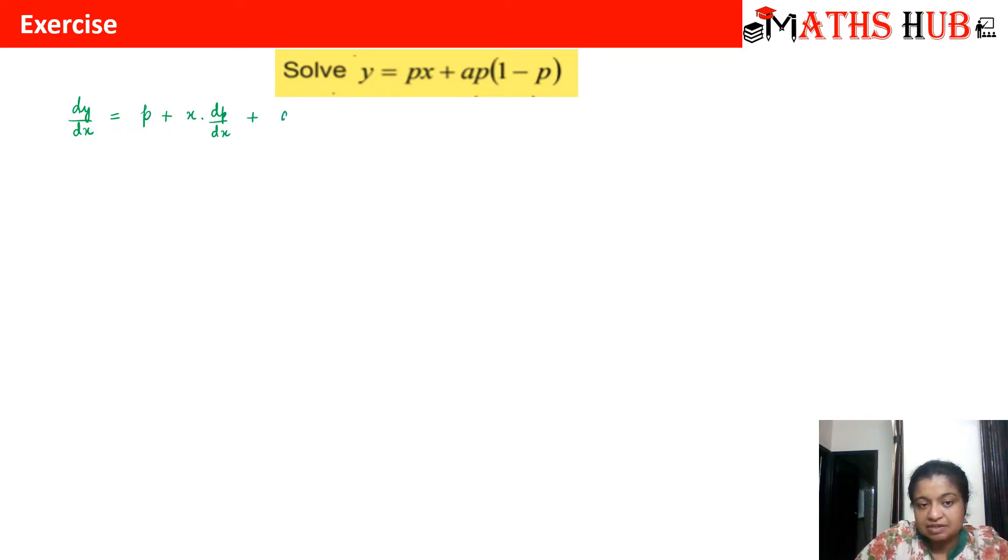Plus a is constant. Now we have p times 1 minus p. You can open it up. The first term will be p, so we will get derivative of p is dp by dx. The second term will be p square, so that becomes 2p times dp by dx.